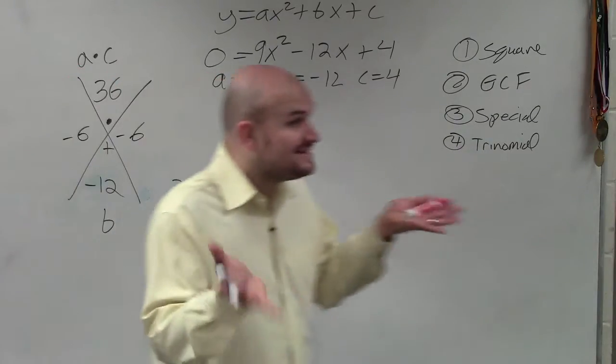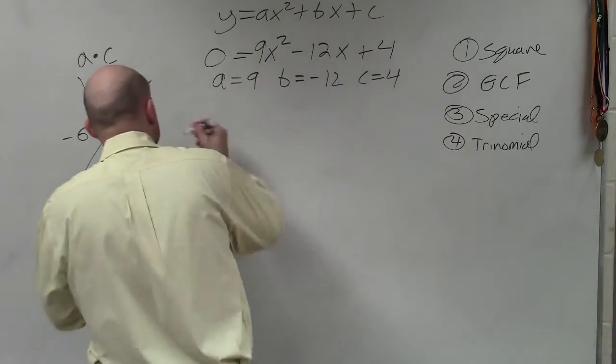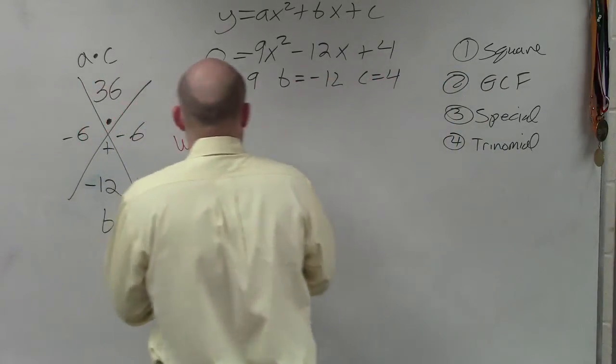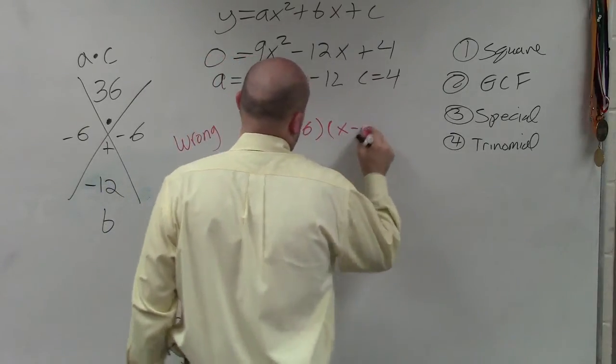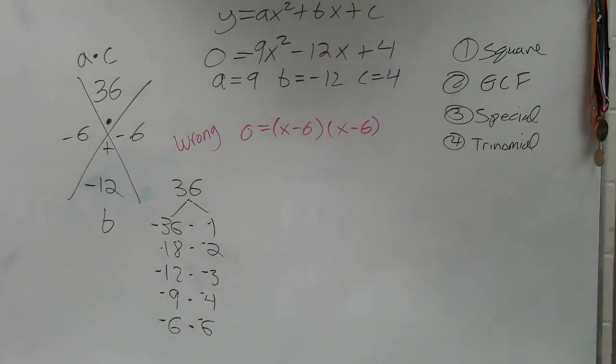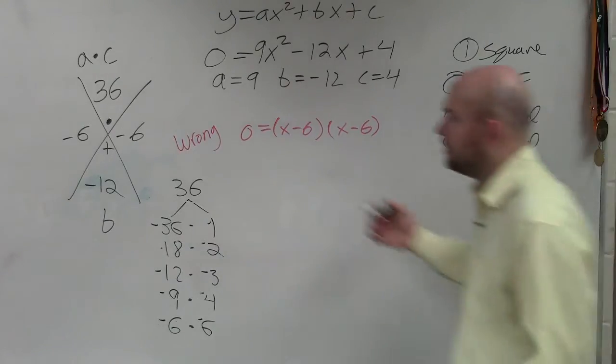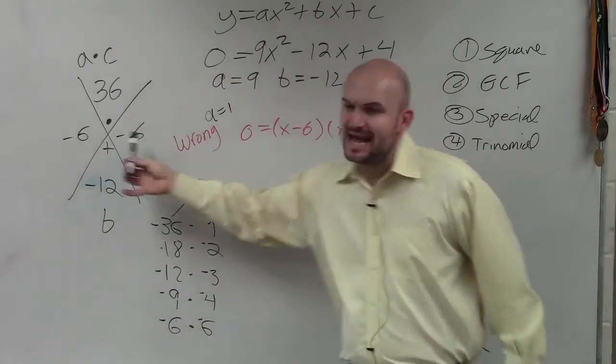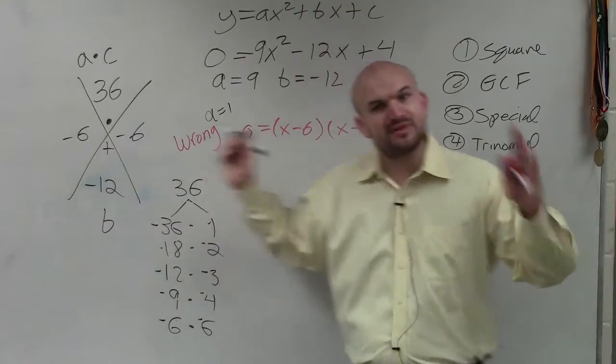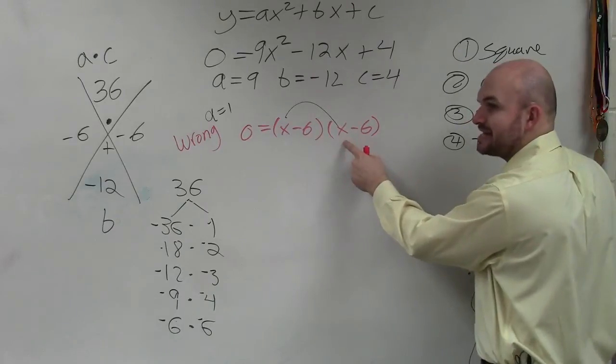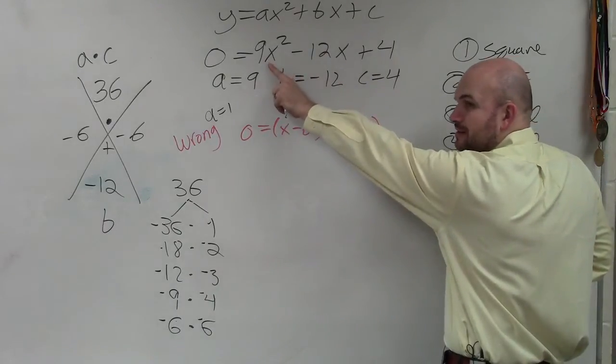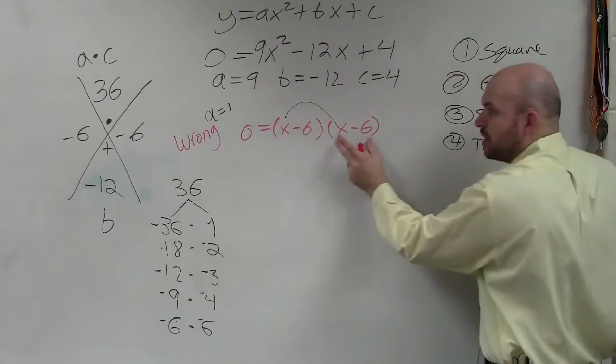So once you've identified this, please do not do this. Do you guys remember doing this last class period? We took our two answers and we wrote them together, right? Do not write that down. That's wrong. That's what we did when a was equal to 1. When a was equal to 1, you can take these as part of being your two factors. But the problem with this is, let's do FOIL. If I multiply the first two terms, x times x gives me x squared. We're supposed to get 9x squared, right? So these are not factors.